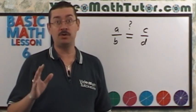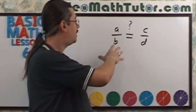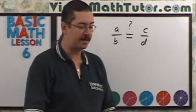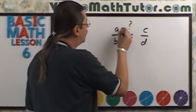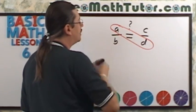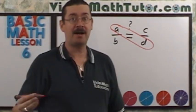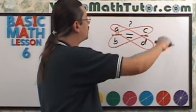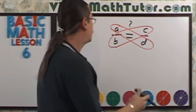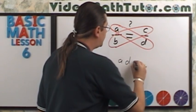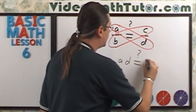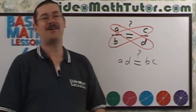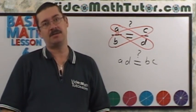If you want to quickly determine whether two fractions are equivalent — say A over B, is it equivalent to C over D — there's a very fast way. You multiply A times D and compare that with B times C. In other words, we're cross multiplying. If A times D equals B times C, then yes, the fractions are equivalent. If they're not the same, then they're not equivalent.